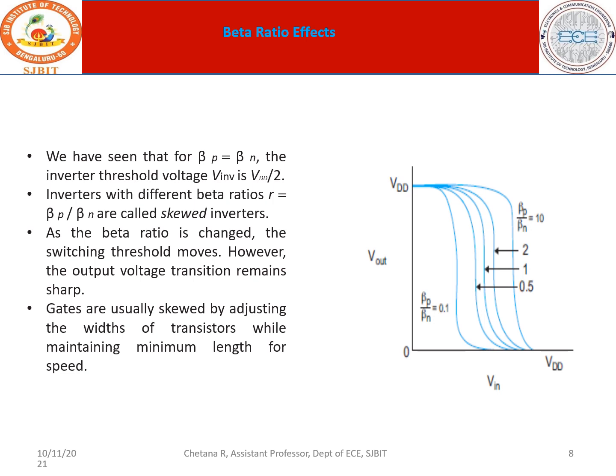Beta is given by W/L. The gates are usually skewed by adjusting the widths of the transistor while maintaining minimum length for speed.